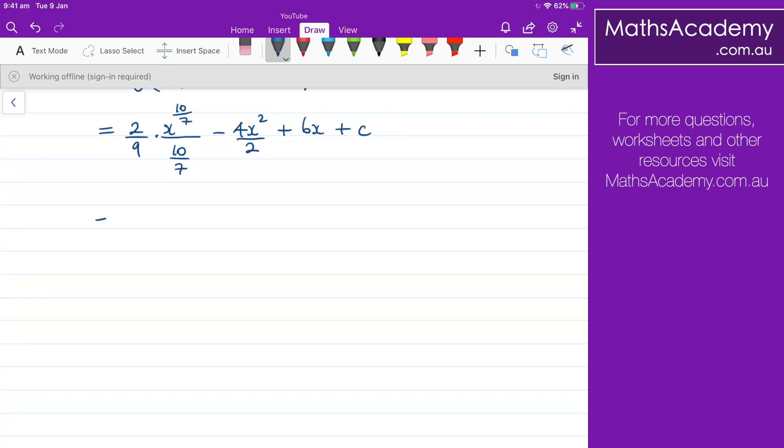So the 2 over 9 I'll just leave the 2 over 9. Now when we're dividing by 10 over 7, that's the same as saying multiply by 7 over 10, so 7 over 10 x to the power of 10 over 7.